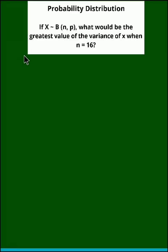Hello and welcome back. We now discuss one more example from probability distribution. The question is: if random variable X follows binomial distribution B with parameters n and p, what would be the greatest value of the variance of X when n is equal to 16?